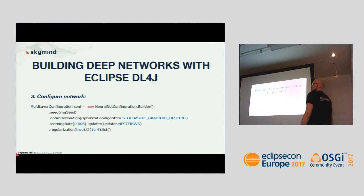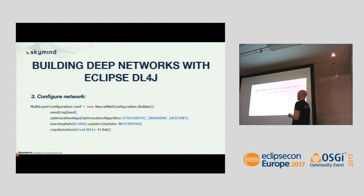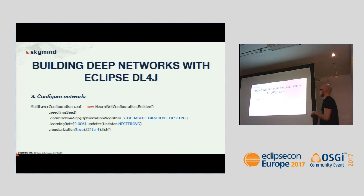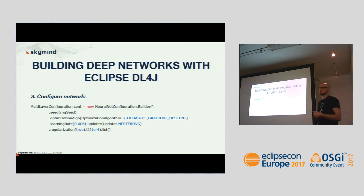The third step is configuring the network. One of the main entry points in DL4J is the MultiLayerConfiguration. It uses a simple builder pattern — you start with the neural net configuration and add properties step by step. For instance, we specify the optimization algorithm: neural networks are usually trained with stochastic gradient descent. You also add regularization and the learning rate.